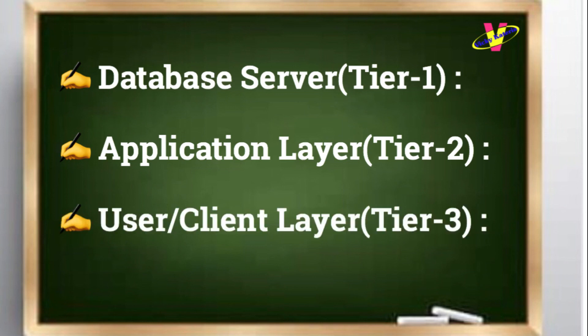User Client Layer, Tier three: This is the topmost layer from where users and clients can request data. In response, the data is fetched from the database tier and passed on to the user client tier via the application layer in the most meaningful way possible. It also provides a graphical user interface to the users.